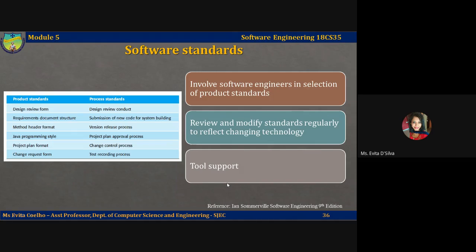Third, provide software tools to support standards. Developers often find standards to be a bugbear when conformance to them involves tedious manual work that could be done by a software tool. If tool support is available, very little effort is required to follow the software development standard. For example, document standards can be implemented using word processor styles. Each project manager should have the authority to modify process standards according to individual circumstances.